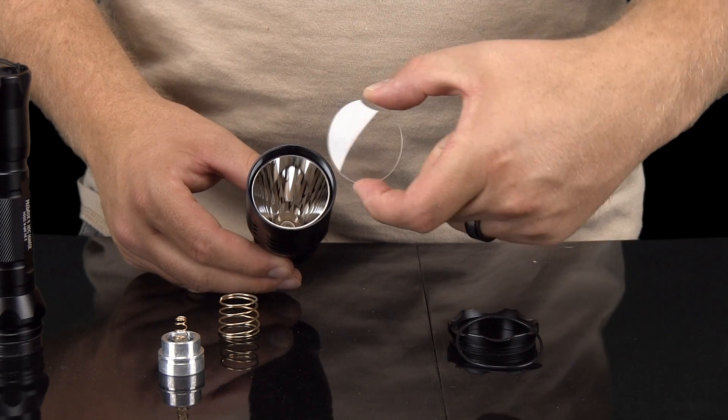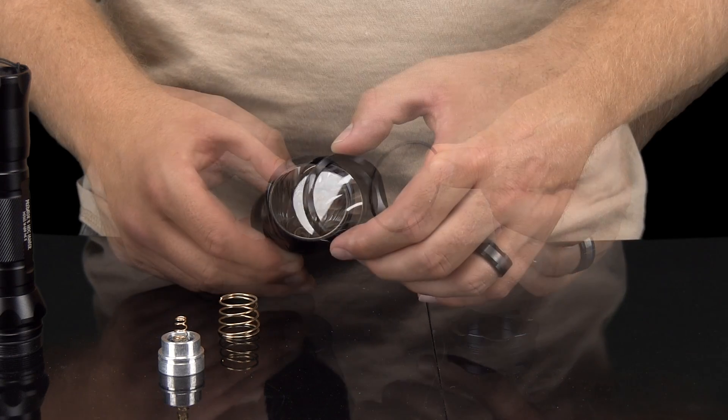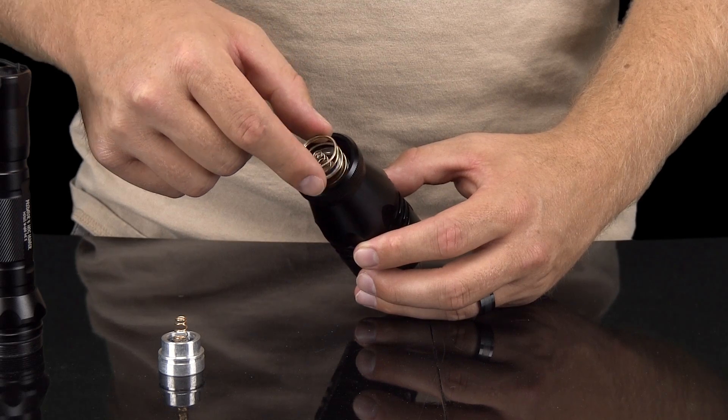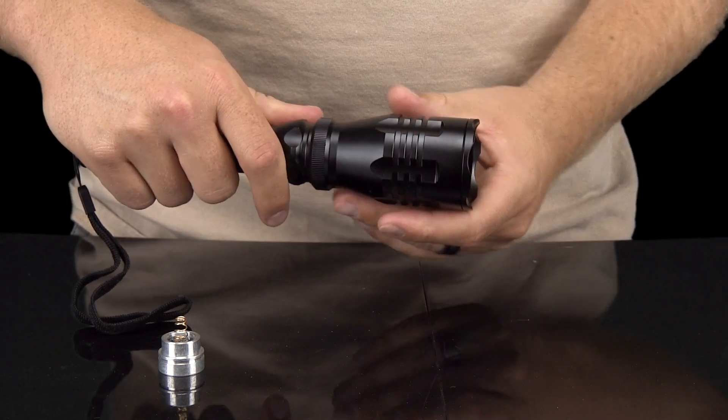Reassemble the bezel by putting the glass lens in first, followed by the O-ring. Screw in the bezel extension, replace the contact spring, and then reattach the bezel to the light housing, and you're good to go.